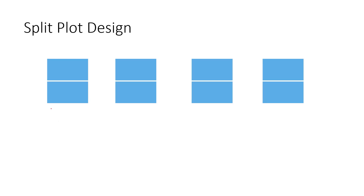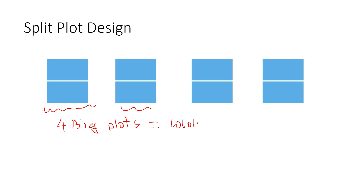For example, I have these big plots — four big plots. In statistical jargon, these are called whole plots. So I have these four big plots, or whole plots, and I want to test the irrigation methods.